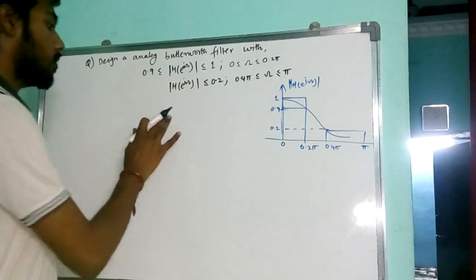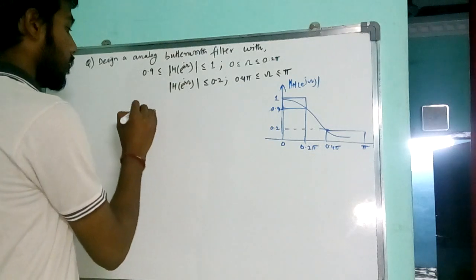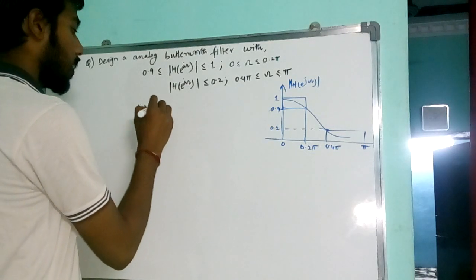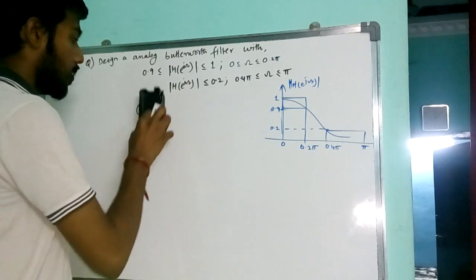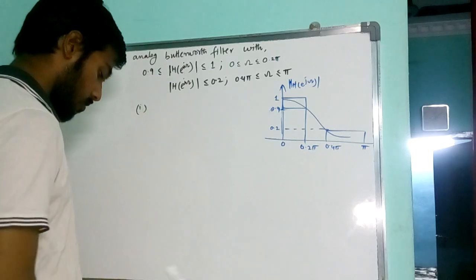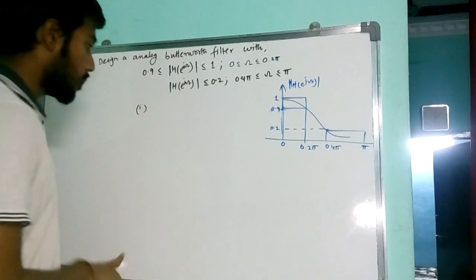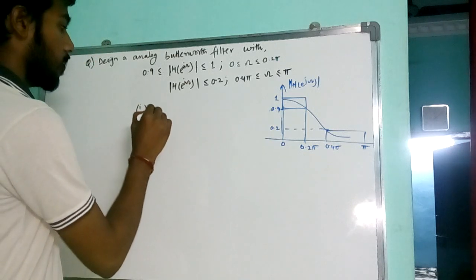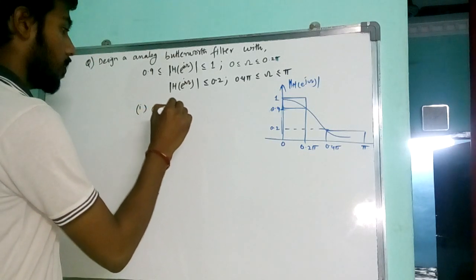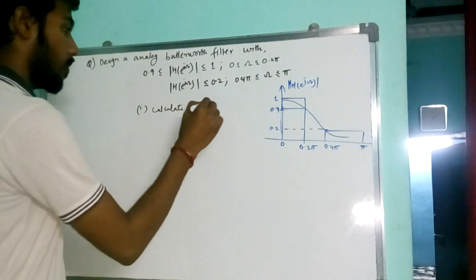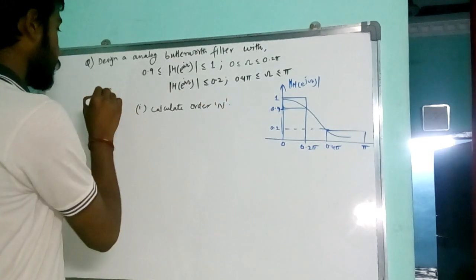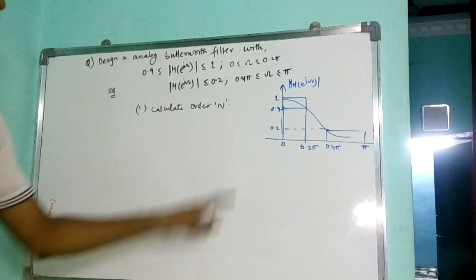Now, we need to design an Analog Butterworth Filter. For that, the first thing we need is calculating the order. Calculate the order n.